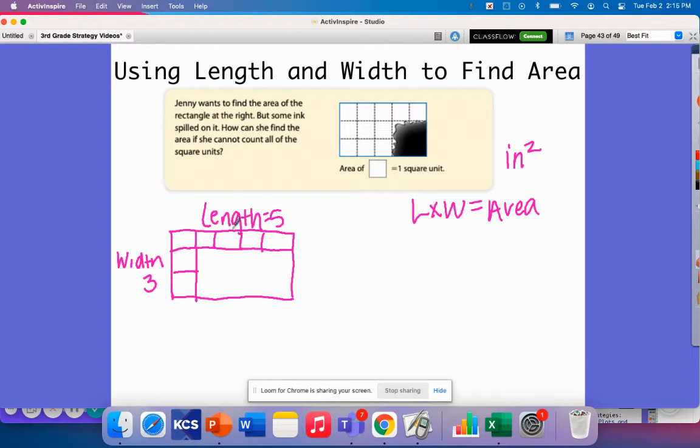If I have these two pieces of information, I can find my area. So if I say length, which was 5, and width, which was 3, 3 times 5 is 15.